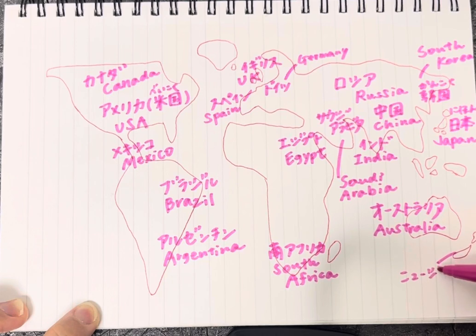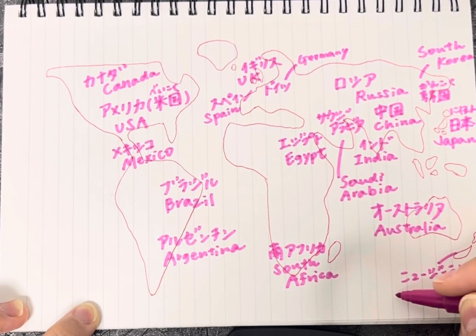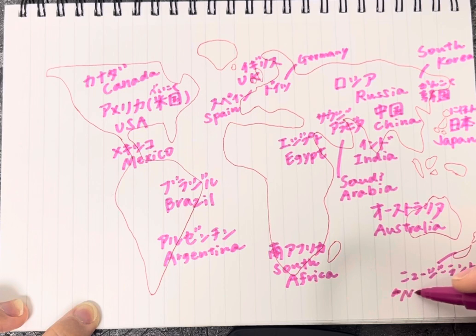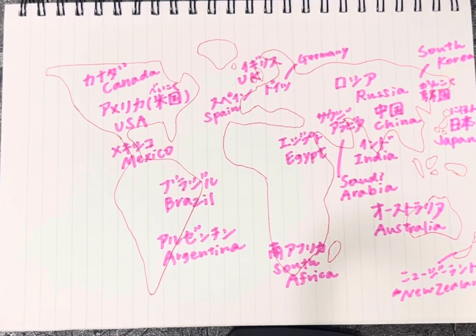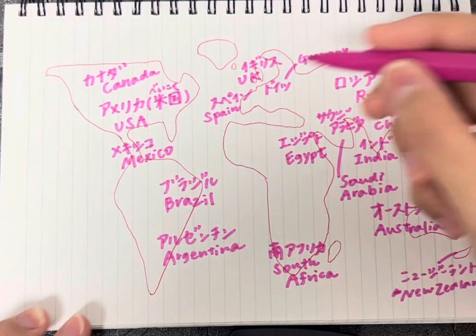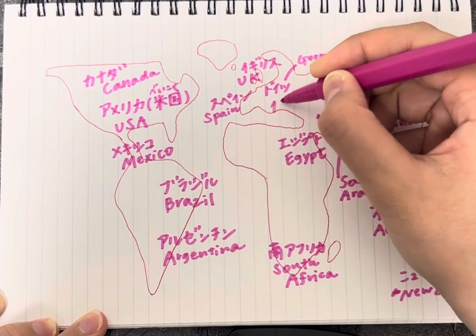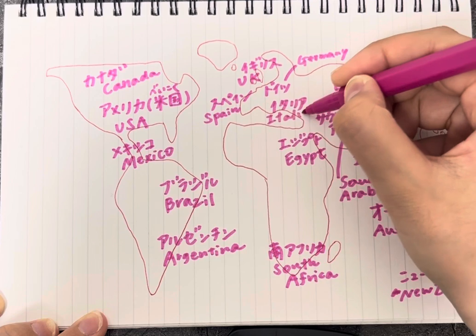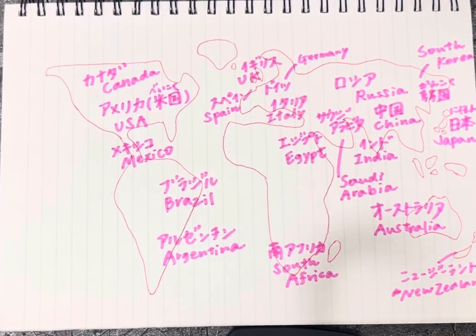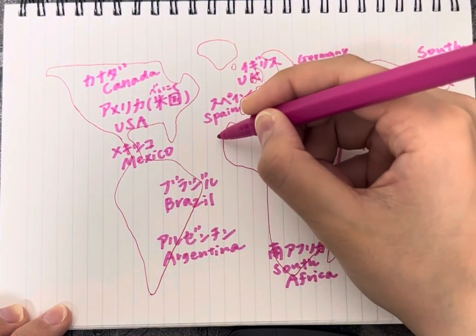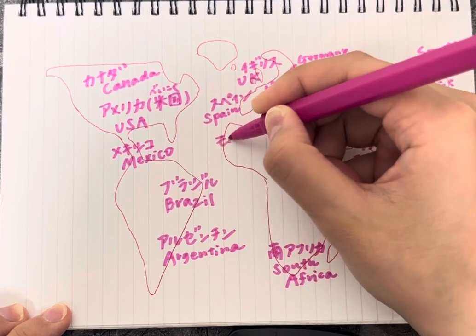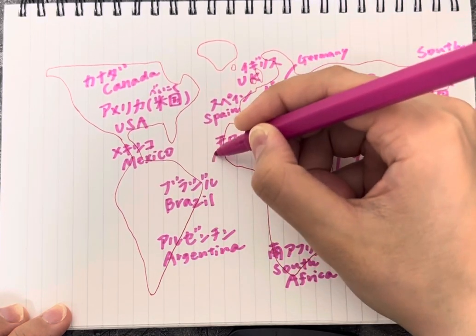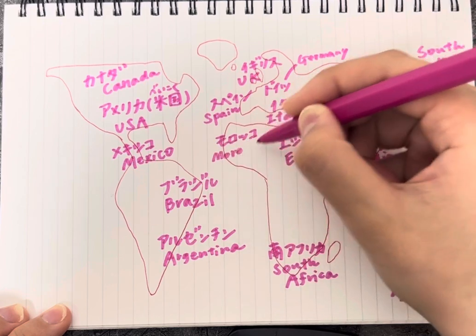New Zealand is Nyūjīrando. Italy is Itaria. Morocco is Morokko.